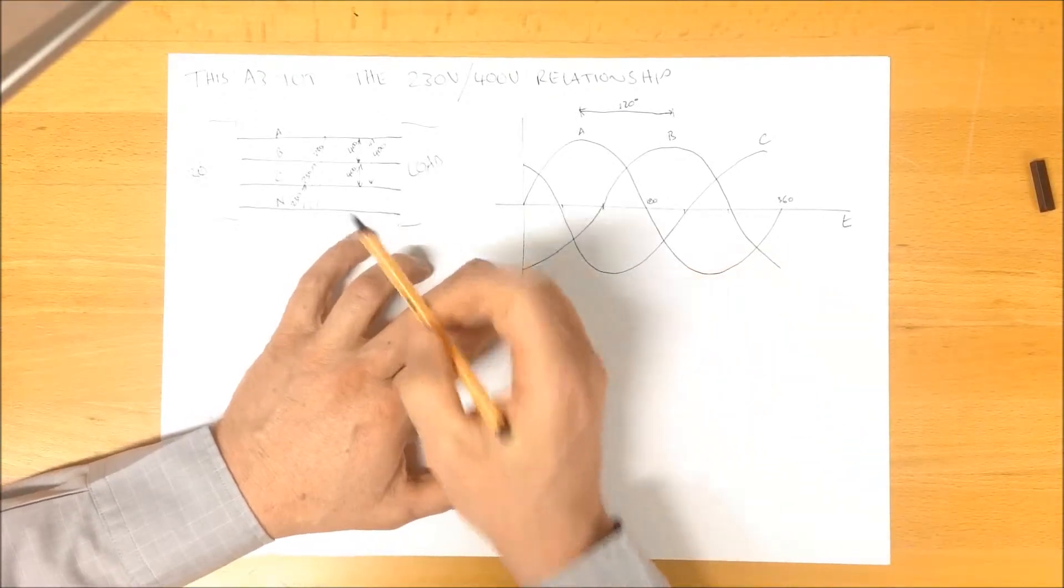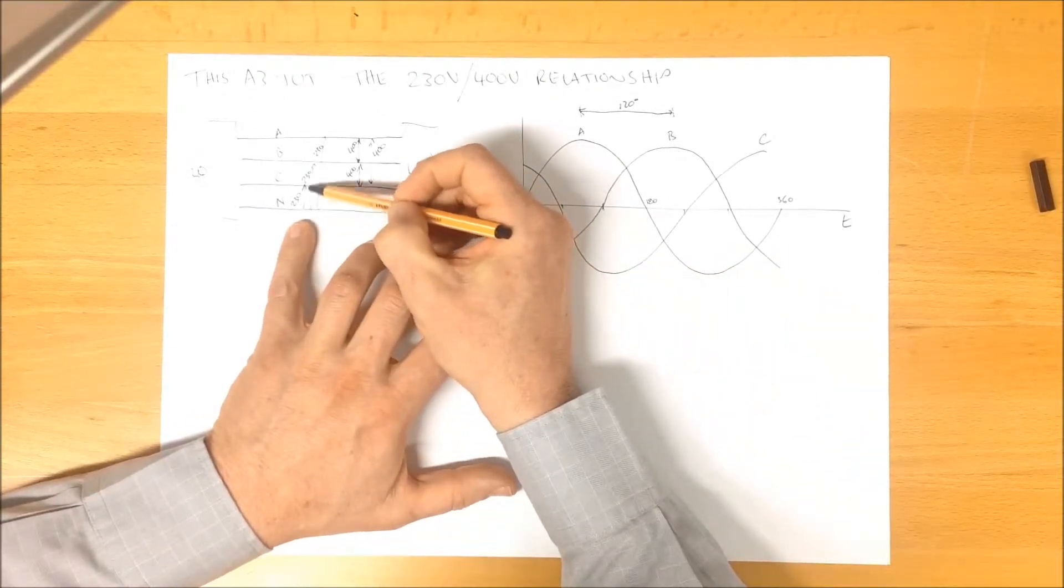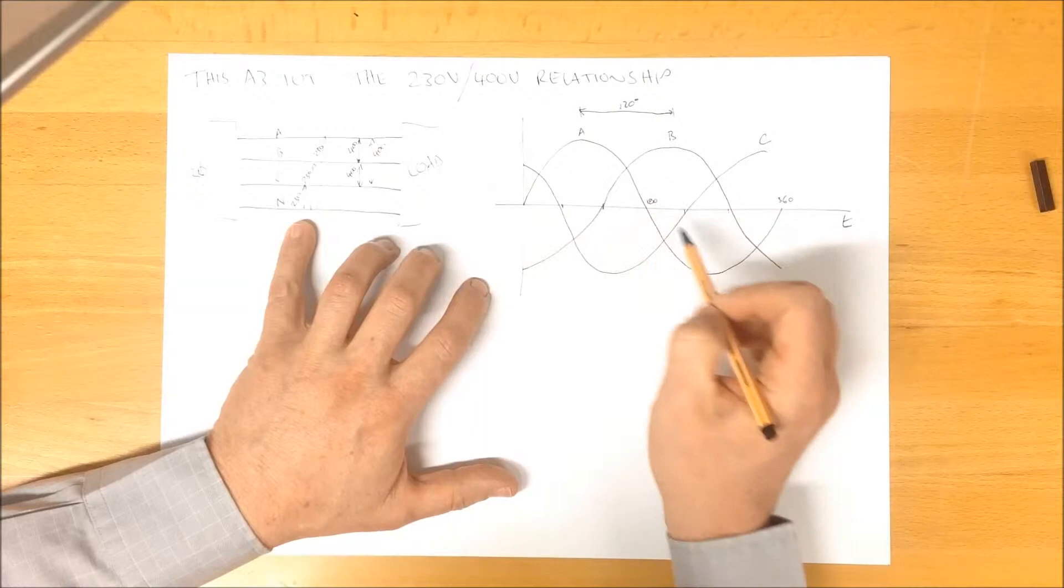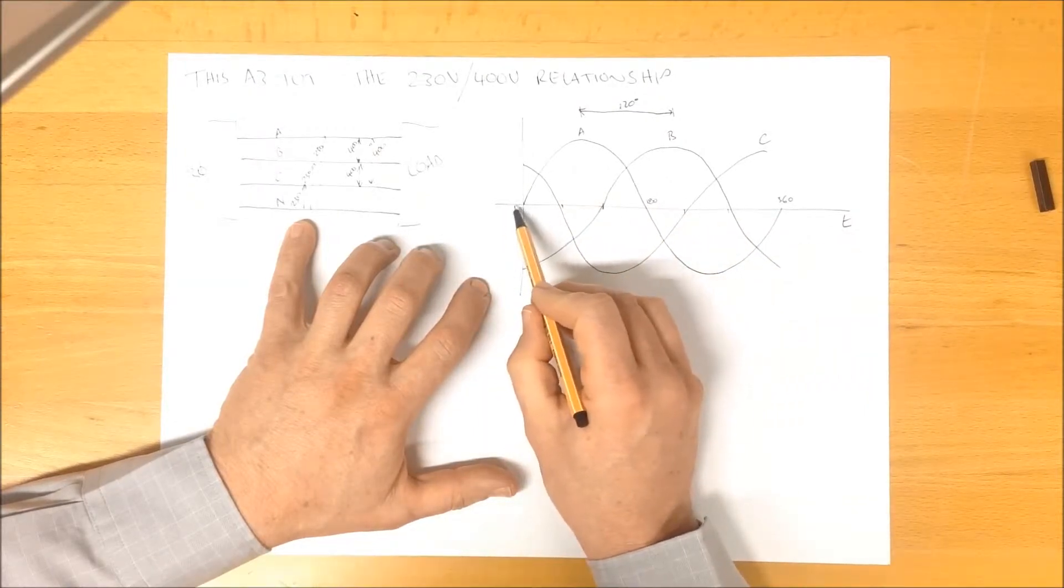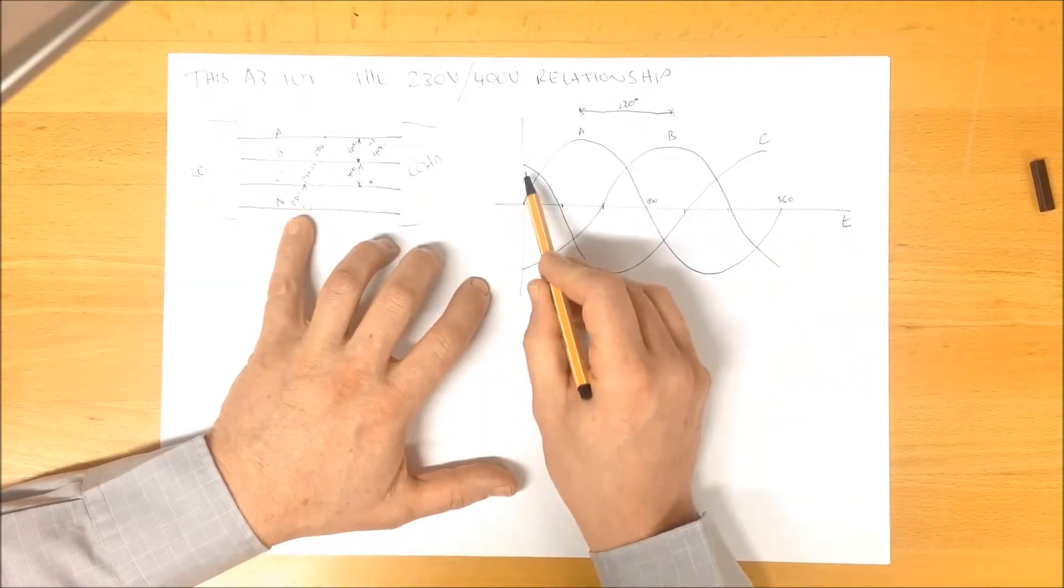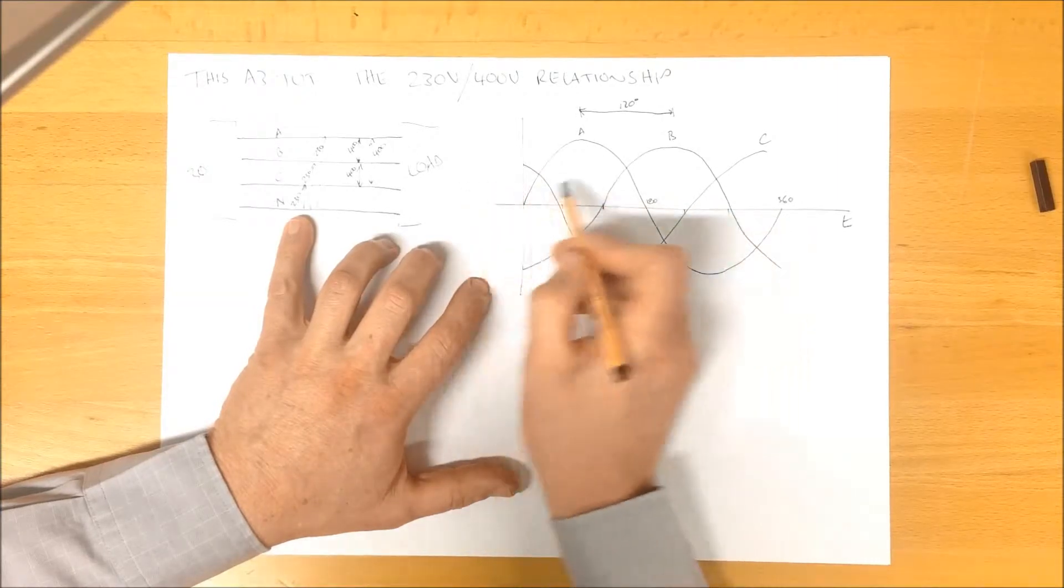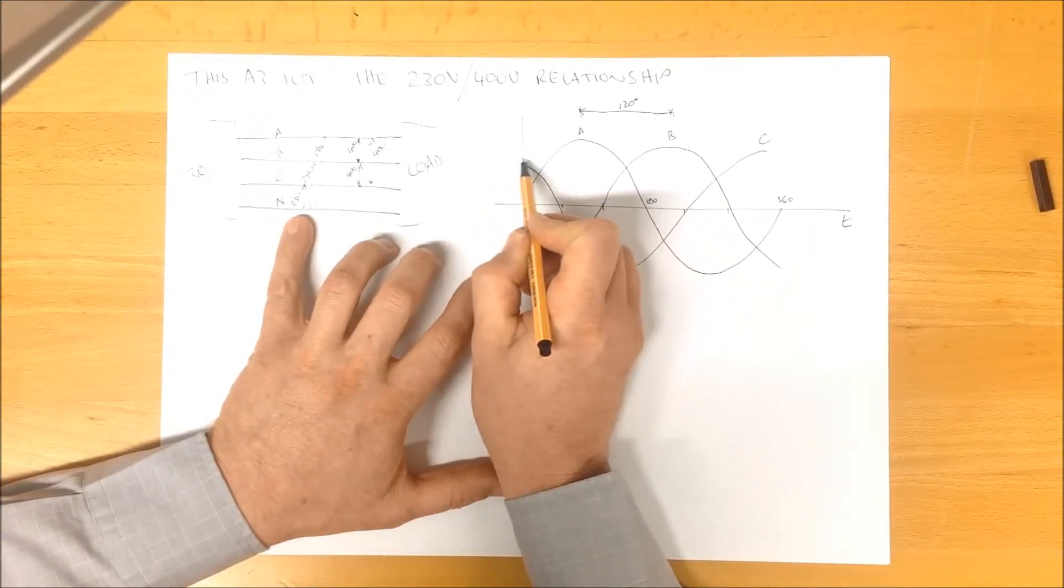Now, we have been measuring over here between the neutral wire and any of these lines, which amounts to measuring between our reference point and the RMS voltage. So the RMS would be through here somewhere, give or take.